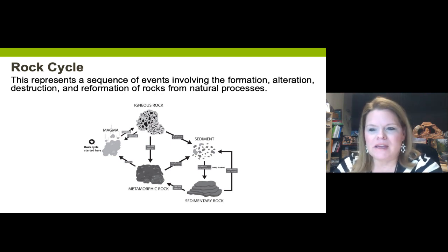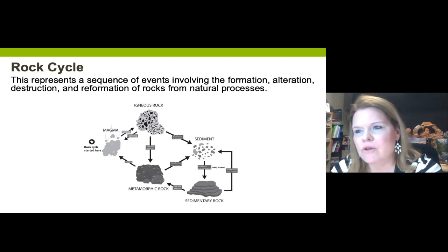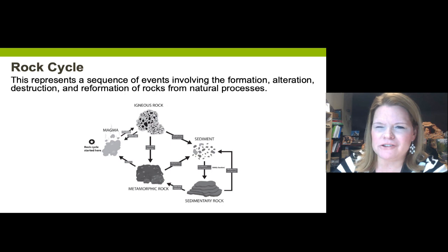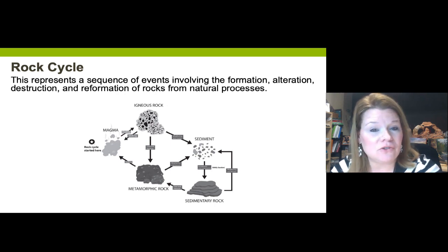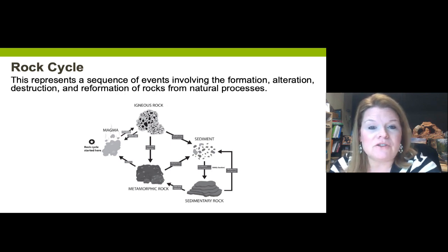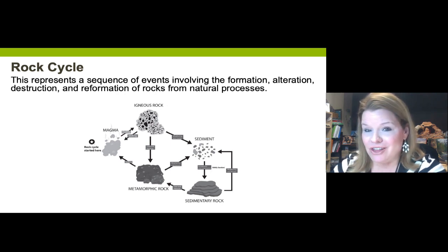The rock cycle is simply the formation, alteration, destruction, and remaking of rocks from natural processes on Earth — from weathering, erosion, burial, subduction, metamorphism, melting, cementation, and lithification. When we say destruction of rocks, we never truly destroy the rock material — we're destroying the rock that was made and remaking it into something new. We're not shipping rock material out into space, so we're recycling what we already have. In a nutshell, that's the rock cycle.